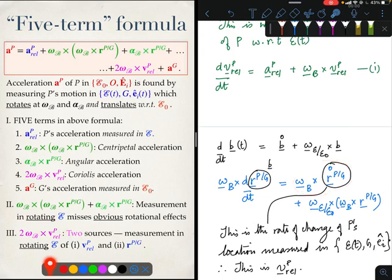This was the second contribution to the Coriolis acceleration. So what does this mean? The Coriolis acceleration arises from our measuring the rate of change of the vector v_P_rel and the vector r_PG in a rotating frame.